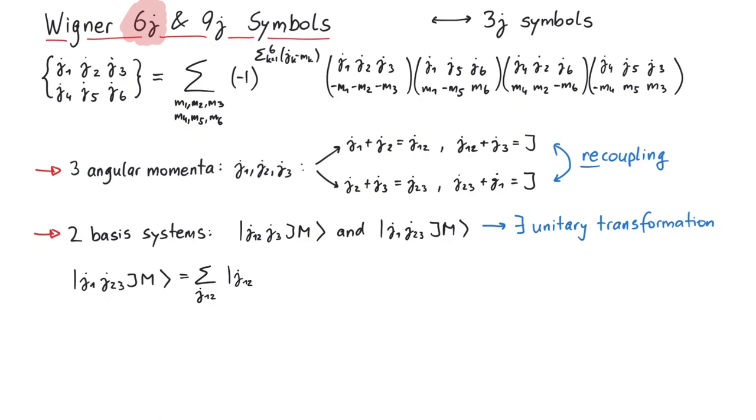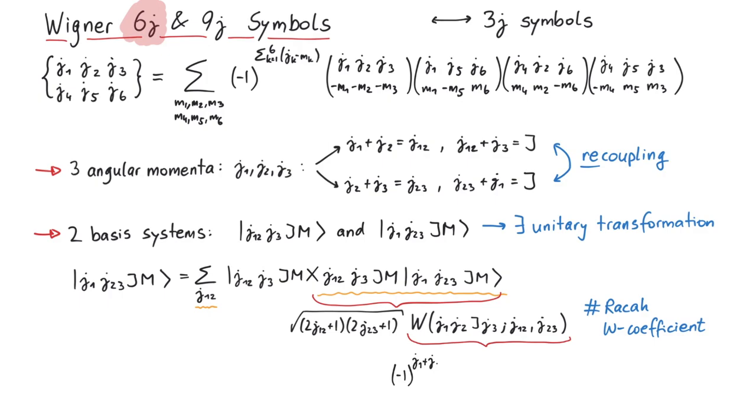So if we start with the j1, j23, jm state, we can expand it into a linear combination of the other basis vectors. One can show that this bra-ket element here does not depend on the magnetic quantum numbers. Therefore, the sum only goes over values of j12. Furthermore, it can be written as a so-called Raqqa W coefficient, which in turn is proportional to a 6j symbol.